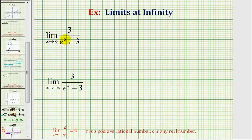So we first want to determine what's happening to e to the power of x as x approaches infinity. Well, we're raising e to larger and larger positive powers, and therefore e to the x would be approaching positive infinity.